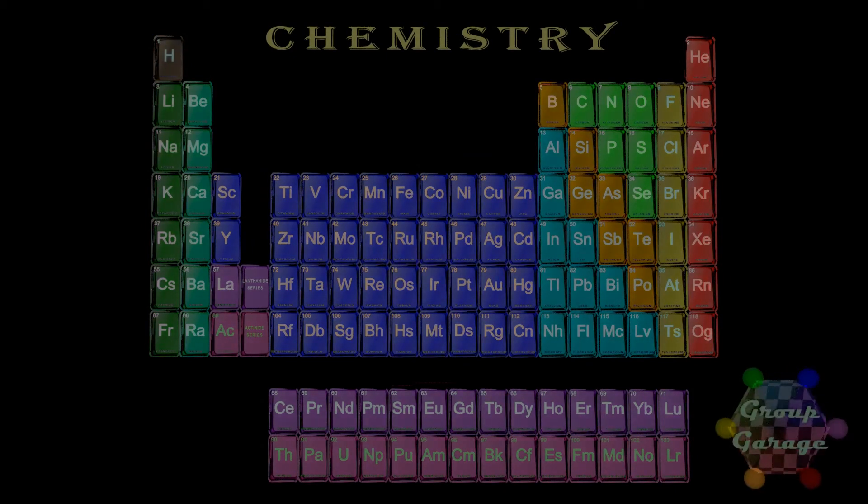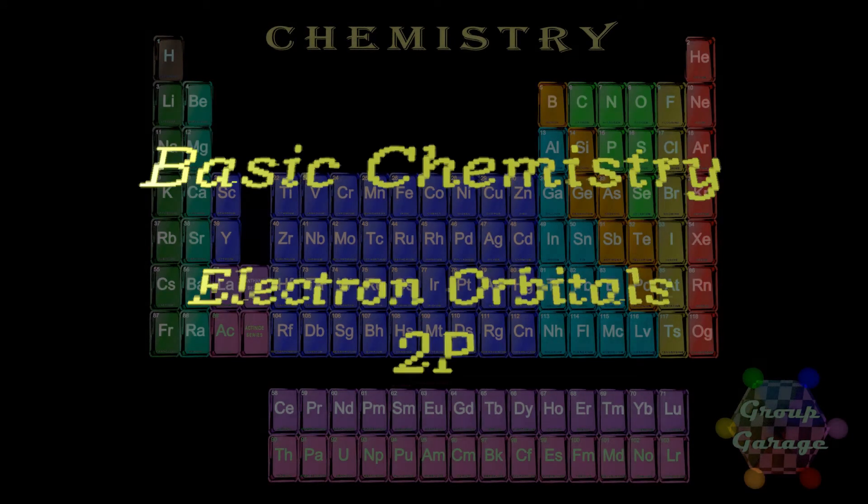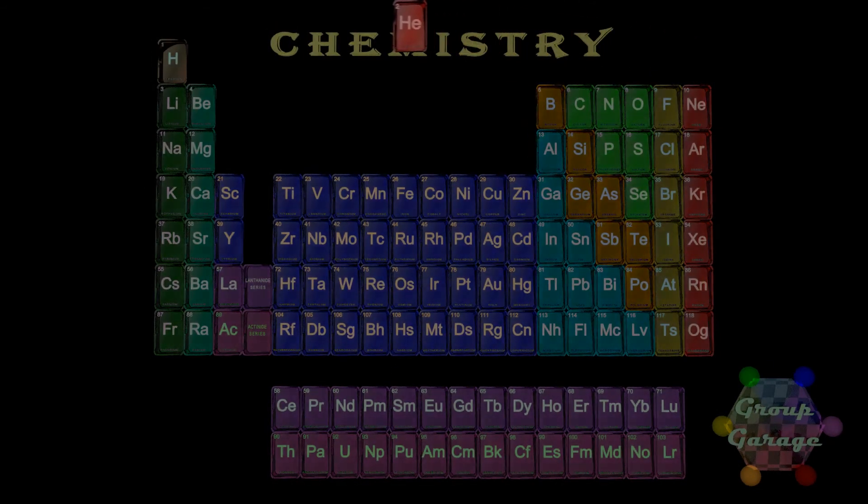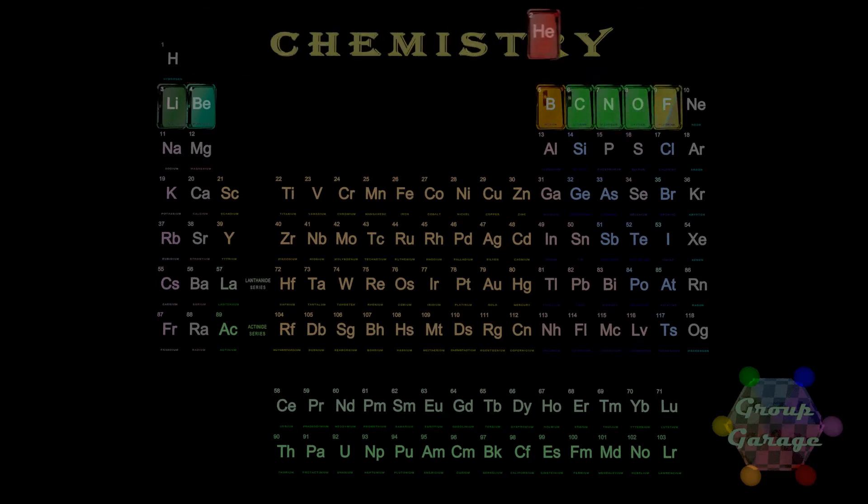This video stays in the n equals 2 level as we begin to look at the second subshell, specifically the p orbitals. On the periodic table, the first period had two elements, hydrogen and helium, and those two electrons filled the 1s orbital. We see the second period has eight elements.